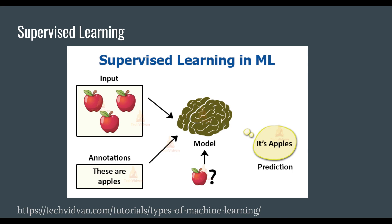The other way to train computer systems is through supervised learning, which is what we'll explore here in part four with text classification. In supervised learning, we don't just provide raw unstructured data. Instead, we provide structured, labeled data called training data. For example, as this image shows, if we want to train a model to recognize whether an image is an apple or not — a binary classification problem — we give it a large set of apple images labeled 'apple' and an equal set of non-apple images labeled 'not apple.'